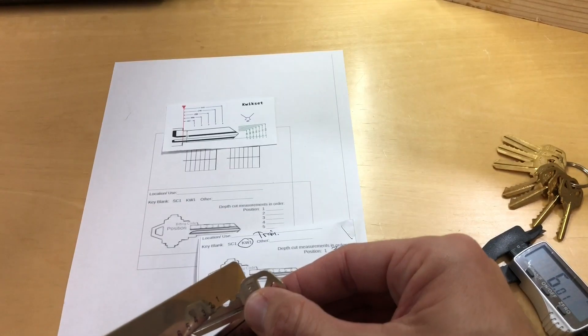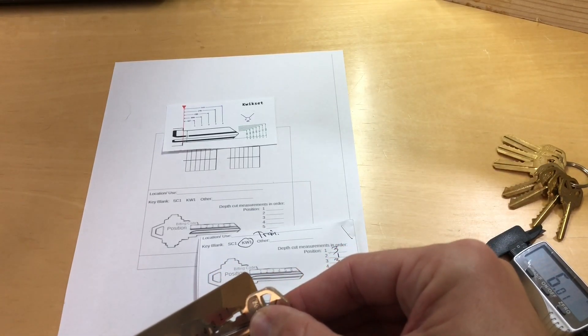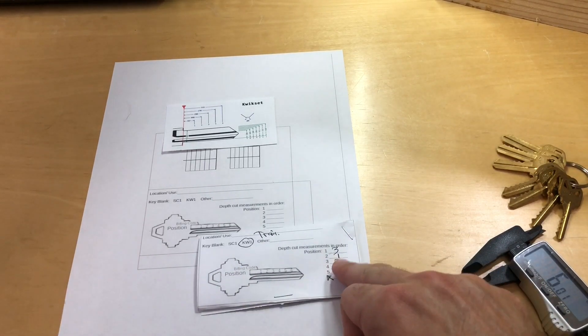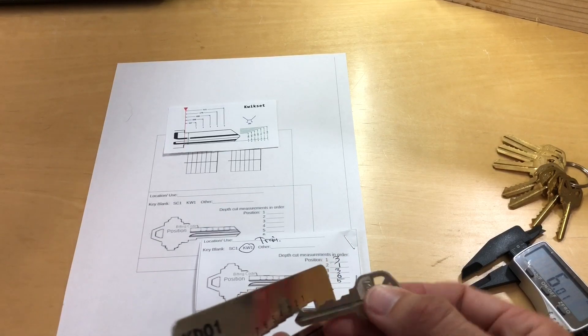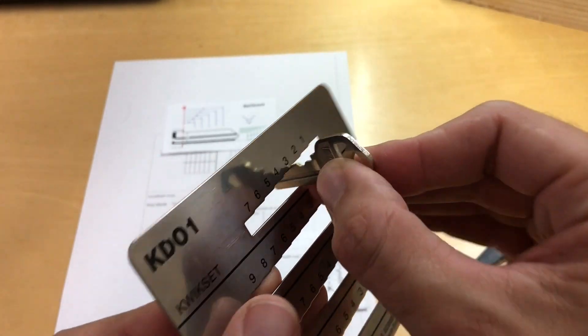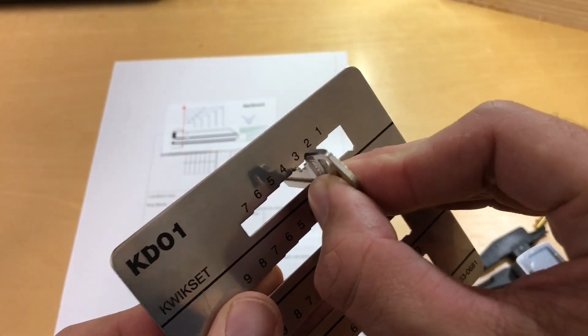Now the second position, I slide it down. It doesn't even make it to the 2, so that's a 1. Okay, the 1 looks good. Third position should be a 3 again. You can see the third plateau is on the 3 position. It won't make it to the 4.